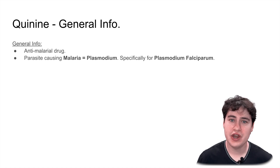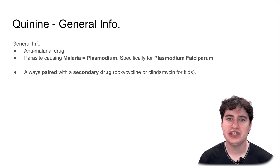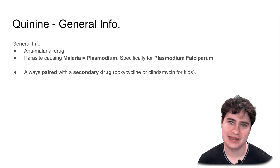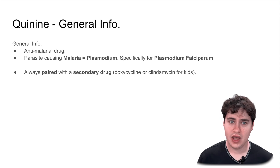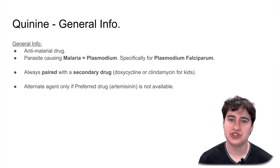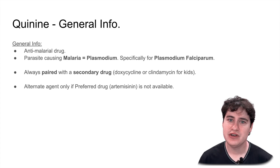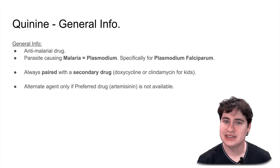An important thing to know about quinine is this drug is never given alone. We're going to want to give it with another anti-malarial drug — specifically, it's usually given with doxycycline or clindamycin, depending on the age group. Clindamycin is going to be preferred for children. Also, I really want to emphasize throughout this whole video: quinine is going to be an alternate agent. This isn't going to be your first drug you're going to want to prescribe. You're going to want to use a drug called artemisinin — I made a whole video talking about that.